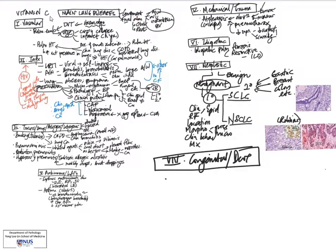The last category would be the one that starts with C. This is congenital or developmental conditions, of which bronchial atresia is one of them. This may be associated with tracheoesophageal fistula. This is quite a serious condition where you can have food entering the airways.